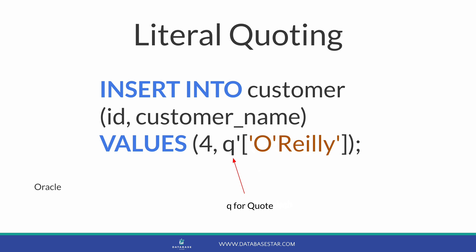Oracle offers another method called literal quoting. This means you put the letter Q in front of the word, then the escape character, then square brackets to surround your string value. So for a value of O'Reilly, an insert statement would look like this. We can see the Q and the single quote before the string. If we select the value from the table, the O'Reilly is shown correctly.